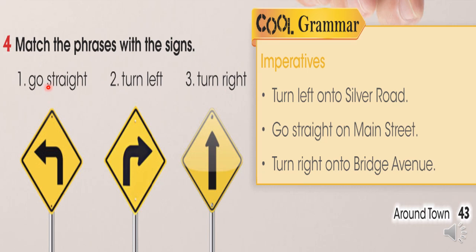Entonces, ¿cuál será la señal para go straight? Ir de frente, ¿verdad? Go straight. Number two: Turn left — doblar a la izquierda. Y por último, Turn right — doblar a la derecha. Very good students.